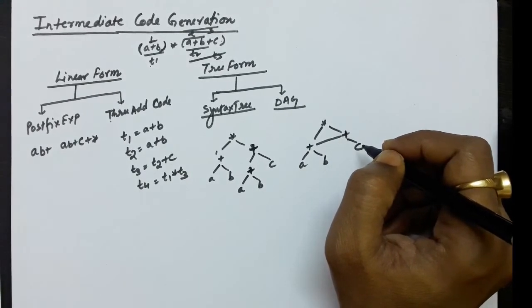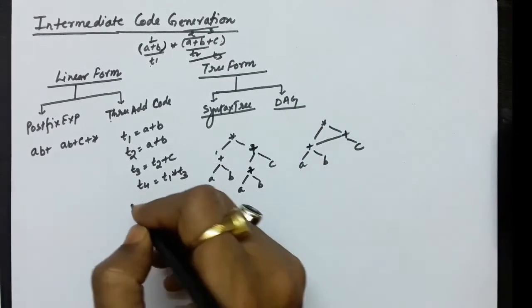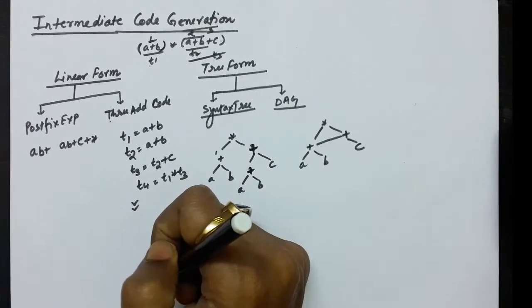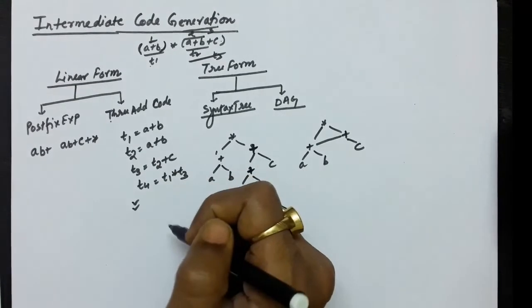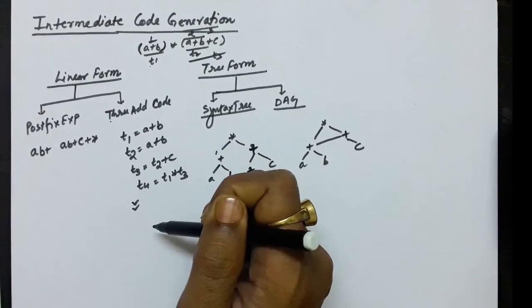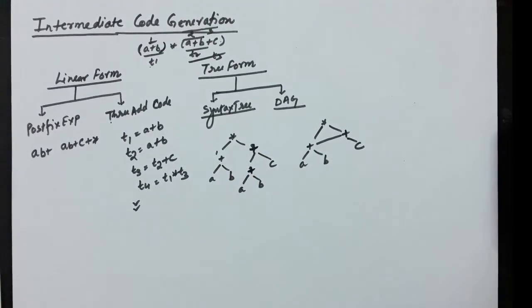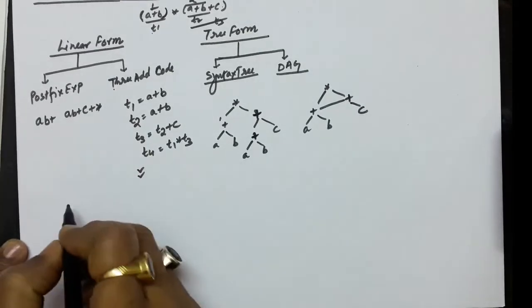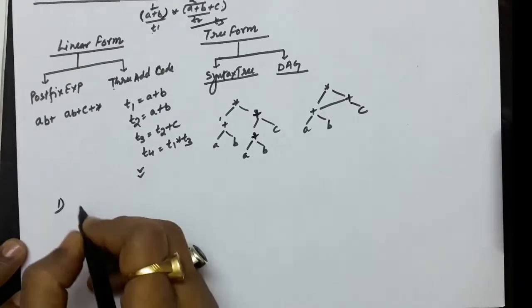Out of all these intermediate code forms, the three-address code is the most popular one. We will be using three-address codes most often, and for any given code we will convert it into three-address form. Let us now list the different ways three-address code statements can be written.